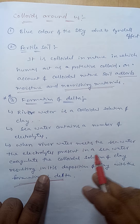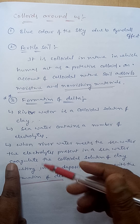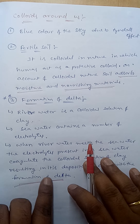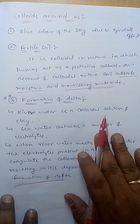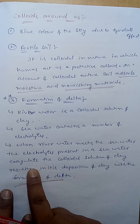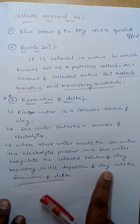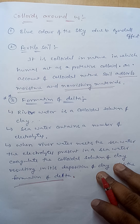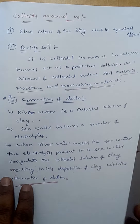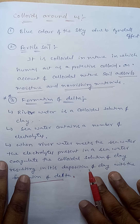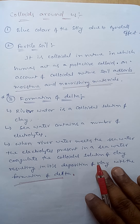Sea water contains electrolytes like sodium chloride, a strong electrolyte. When sea water meets river water, coagulation takes place, and the colloidal solution of clay is deposited, forming deltas across the earth. In the next class, we will discuss objective-related topics — problems related to gold number and the electrostatic precipitator. Thank you.